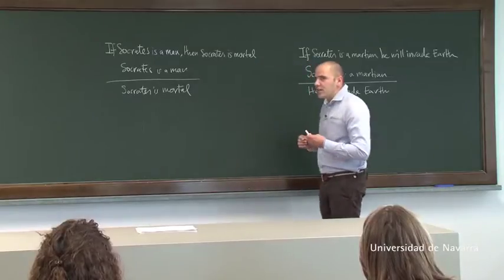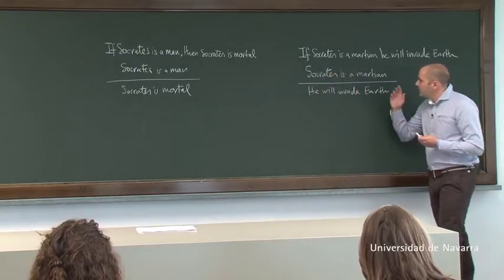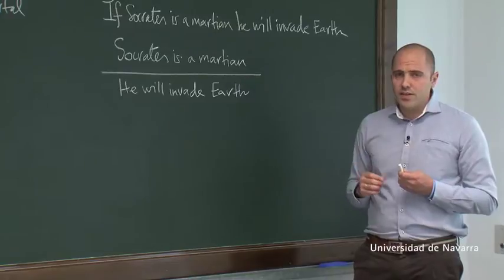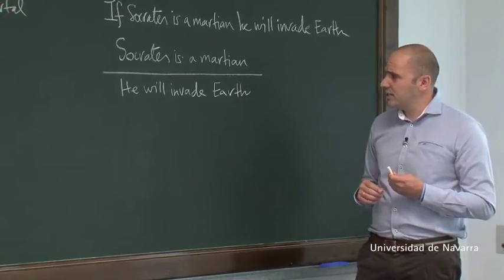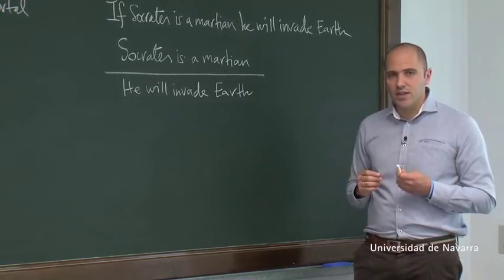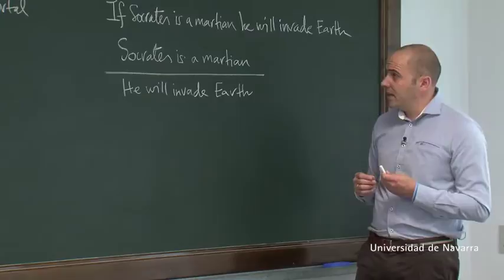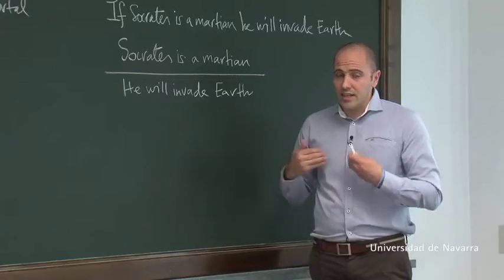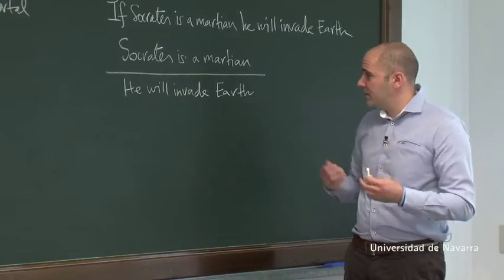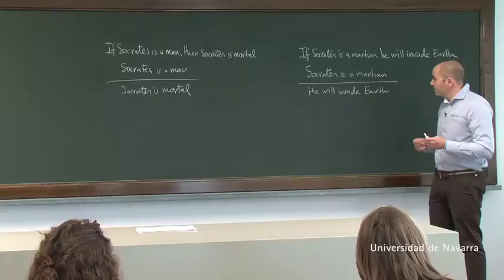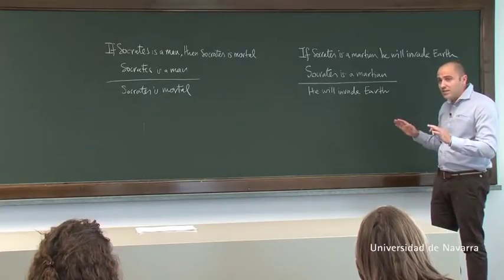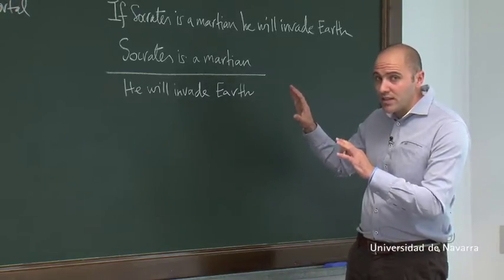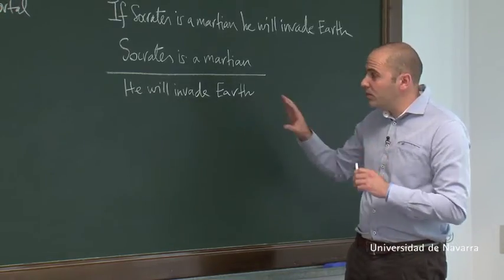Consider this second argument: If Socrates is a Martian, he will invade Earth. Socrates is a Martian, therefore he will invade Earth. This argument is clearly valid, but I don't believe that Socrates is going to invade Earth, so I better not believe some of the premises. Because if I believe the premises, I am bound to believe the conclusion.